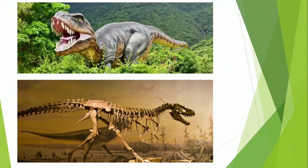Children, have you ever heard of dinosaurs? They lived on earth a long time ago. There were sudden changes in the climate of the earth and they were not able to adjust or adapt themselves to the changing surroundings, so they died. Animals have special body parts which help them to adapt or adjust to their surroundings.